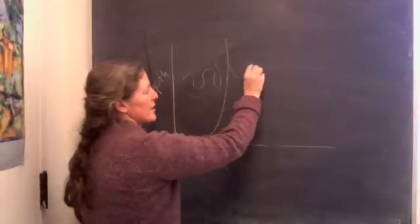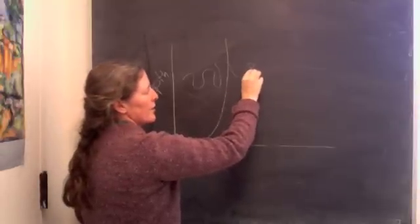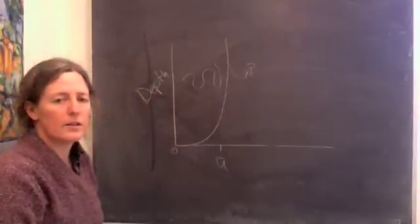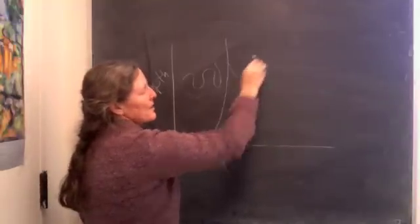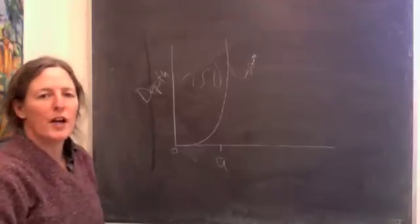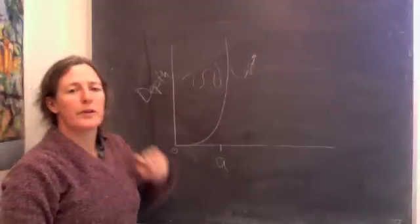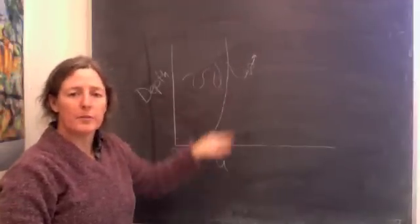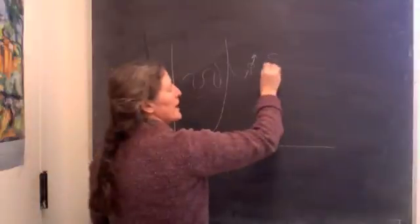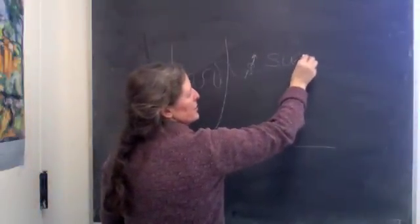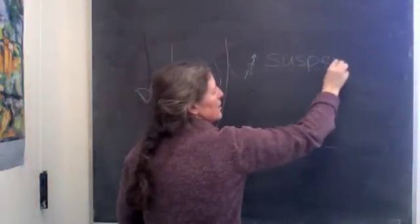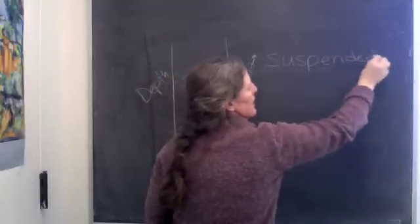They have a settling velocity that you could calculate with a Stokes settling velocity. But the bursts of turbulence are large enough that they keep the grains in suspension and keep them from settling out. So grains that stay up off the flow are in suspension, so they're suspended.